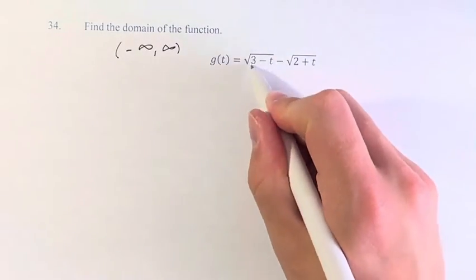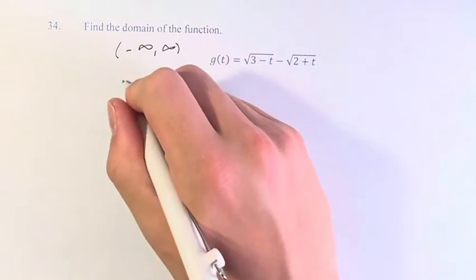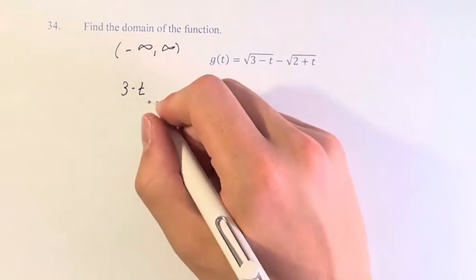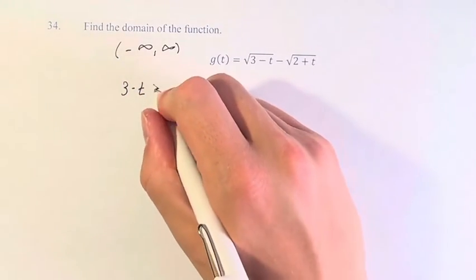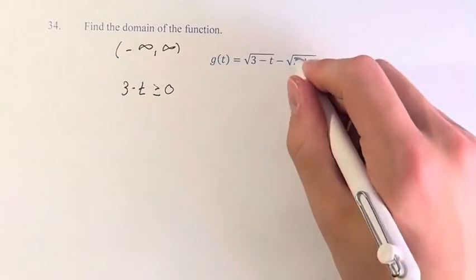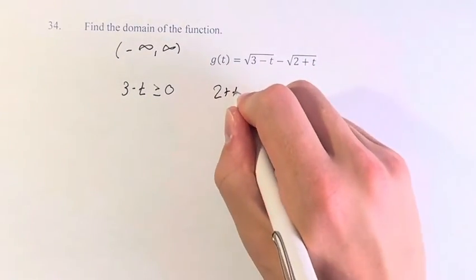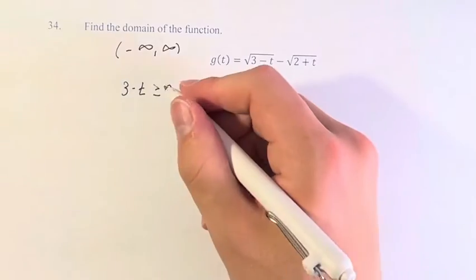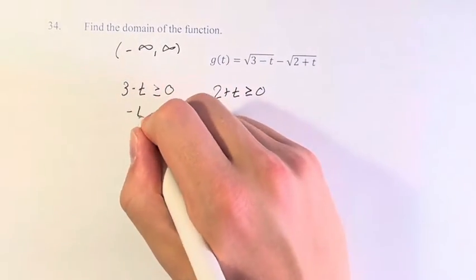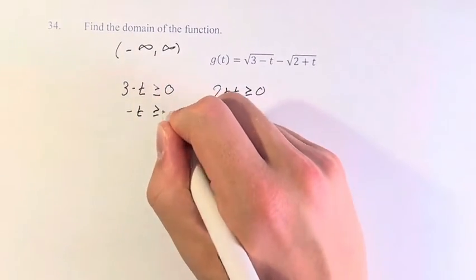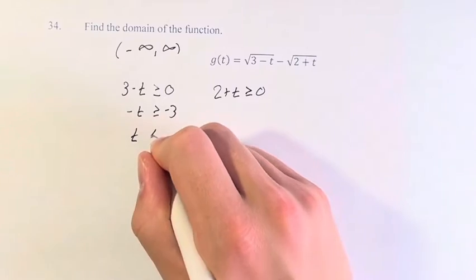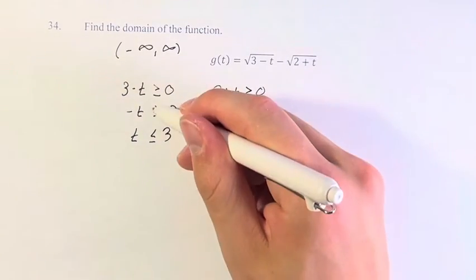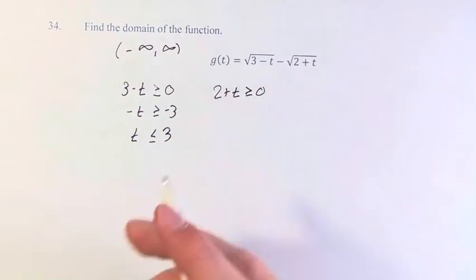So for here, that means that 3 minus t has to be a non-negative number — it has to be greater than or equal to 0. And the same thing here, 2 plus t has to be greater than or equal to 0 as well. So then solving for t here, we have negative t is greater than or equal to negative 3. Therefore, t has to be less than or equal to positive 3, right? Dividing by negative 1, make sure to flip the sign.